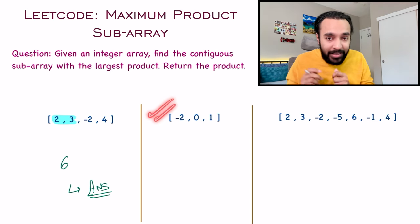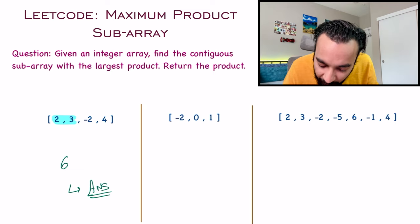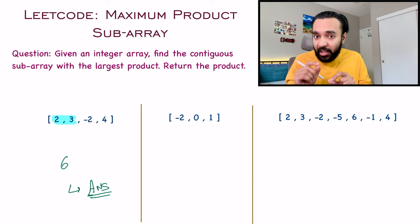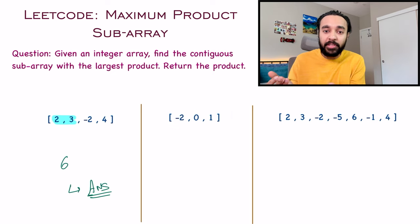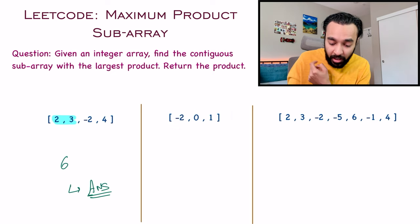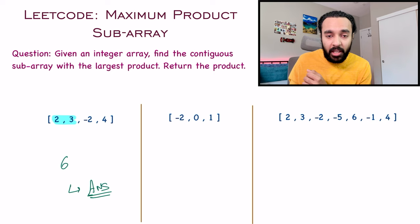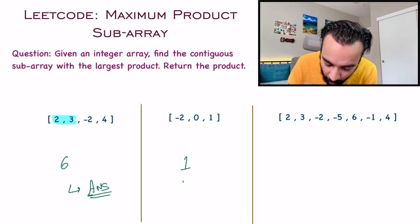So for test case number one, 6 is the answer. Similarly, let us look at test case number two. In test case number two, I have a 0 in between. So naturally, if I include this, the entire product will be 0. So either I can take a 1 or I can take a minus 2. The maximum product I can get is 1. So for test case number two, 1 will be your answer.